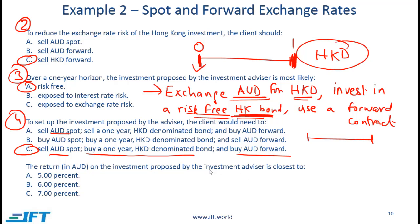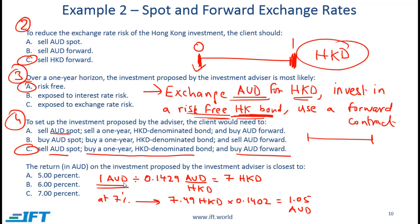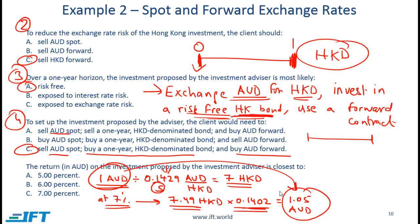To calculate the return: start with one Australian dollar. At a spot rate of 0.1429 AUD/HKD, one Australian dollar converts to seven Hong Kong dollars. Those seven Hong Kong dollars are invested at 7%, giving 7.49 Hong Kong dollars after one year. Using the forward rate booked at time zero, 7.49 Hong Kong dollars converts to 1.05 Australian dollars. Starting with one Australian dollar and ending with 1.05, the return is 5%.